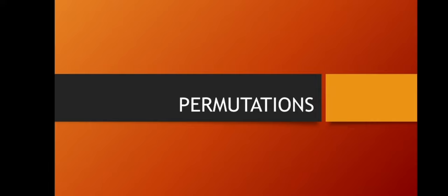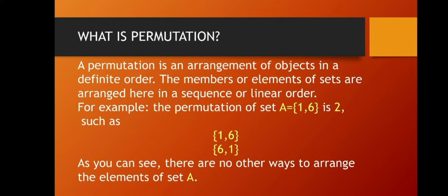Now let's go to permutations — you're going to love these because it is an easier topic. A permutation is an arrangement of objects in a definite order. The members or elements of sets are arranged in a sequence or linear order. For example, the permutation of set A = {1, 6} is 2. So in just this set A, we can create two permutations: that is (1, 6) and (6, 1). As you can see, there are no other ways to arrange the elements of set A — permutations are all about arrangements.